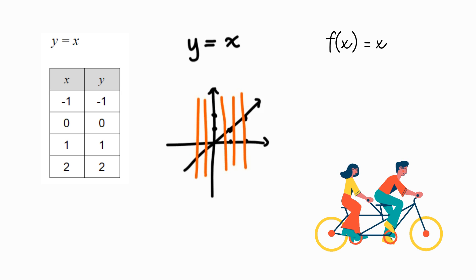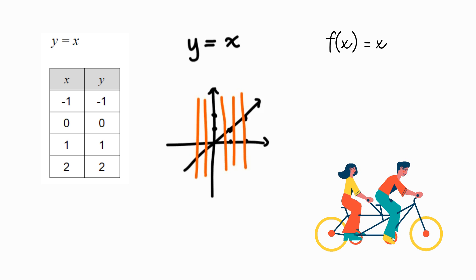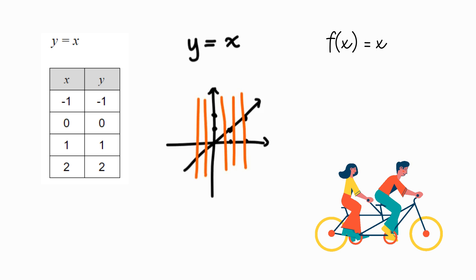When you see a graph and you want to know if the relation is a function, draw a number of vertical lines and see if for every x there is only one corresponding y value.